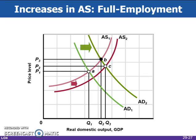The economy moved from A to C rather than from A to B. It experienced strong economic growth from Q1 to Q3, full employment, and only very mild inflation from P1 to P2, before receding in March of 2001.